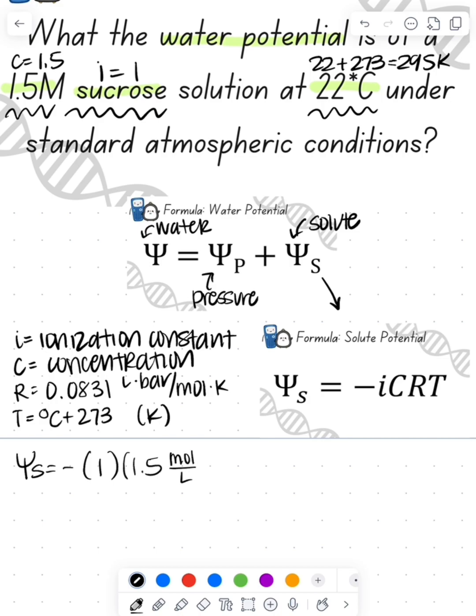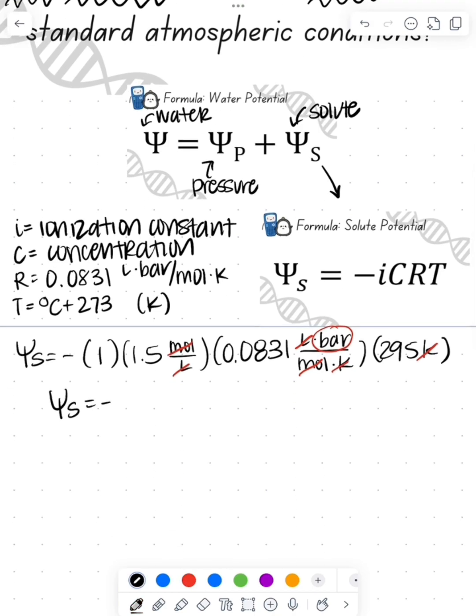So we sub this to our equation. We see that we have negative one times the 1.5 molar times our pressure constant times our temperature of 295 Kelvin. We're going to cross out our moles, cross out our Kelvins, and cross out our liters, leaving us just with our unit of bars. So our solute potential is going to be negative 36.77 bars.